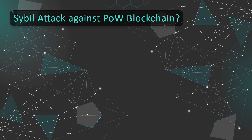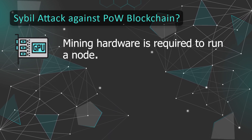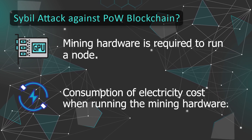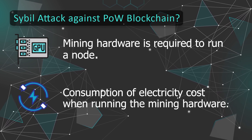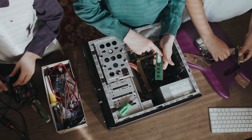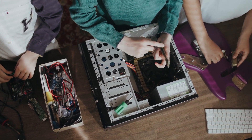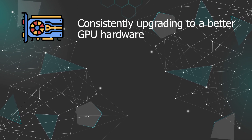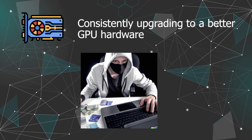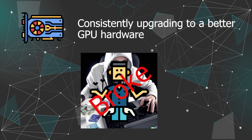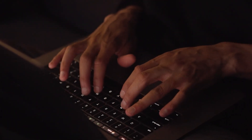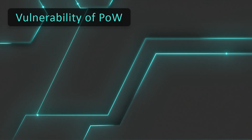In proof-of-work blockchains, the nodes that actually make decisions on transactions are the mining nodes. There is a real-world cost — buying the mining hardware and consuming electricity — associated with creating a fake mining identity. In addition, having a large number of mining nodes still doesn't suffice to influence the network meaningfully; it would also require a large amount of computational power. These associated costs make Sybil attacks harder to occur on a proof-of-work blockchain.